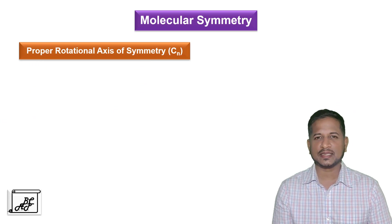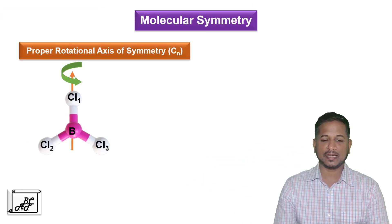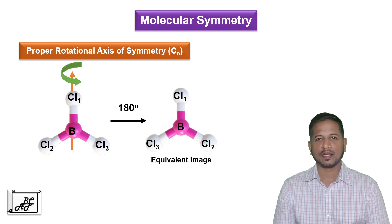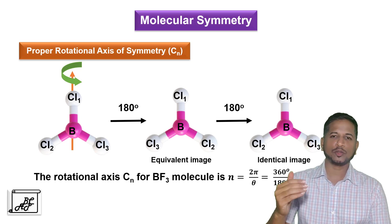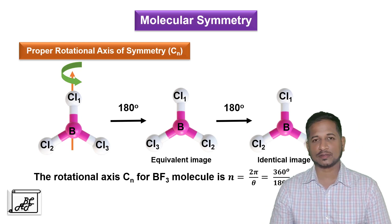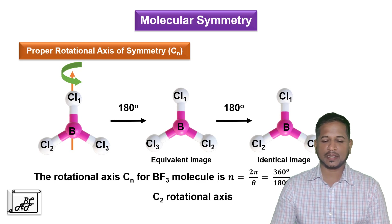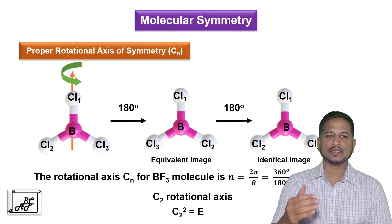Let us understand the BCl3 molecule from another angle. If I rotate this BCl3 molecule around a different axis, I will again get an equivalent image. Earlier we rotated the molecule around the first axis; now I am changing the axis and rotating the molecule in a different direction — here also we get an equivalent image. If I rotate this BCl3 molecule through 180 degrees, I get an equivalent image, and if I rotate it again we get an identical image. Since we are rotating through 180 degrees, this is a C2 axis of symmetry, and after two rotations we get an identical image, so C2 squared equals the identity element.